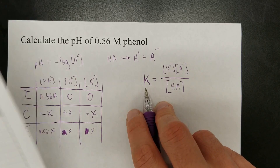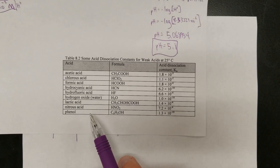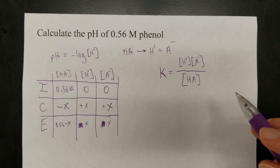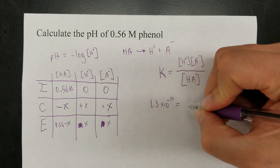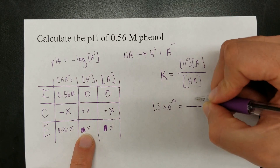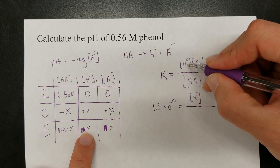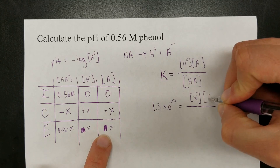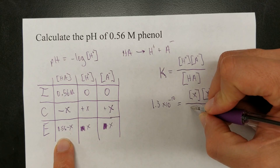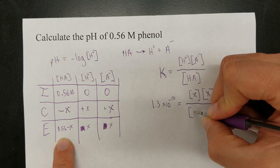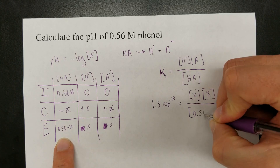The Ka value itself comes from the dissociation constants table and does not need to be memorized. We're dealing with phenol — there it is: 1.3 times 10 to the negative 10th. So Ka equals 1.3×10⁻¹⁰, which equals x times x over (0.56 minus x). The parentheses are just to make it easy to see the parallel between the ICE table entries and the Ka expression.